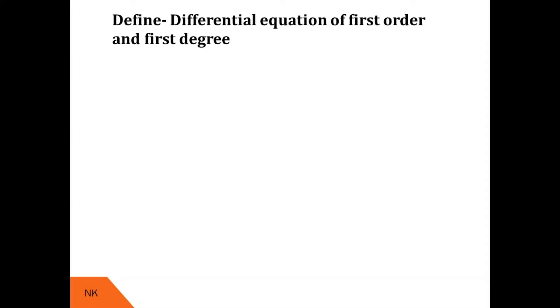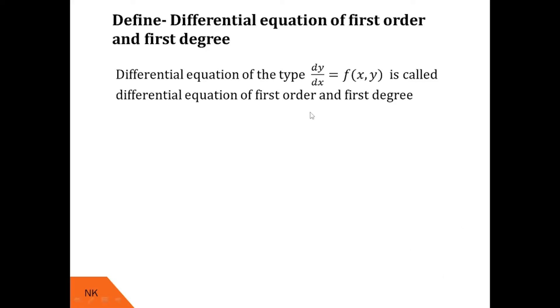A differential equation is an equation in which a differential coefficient dy/dx or dy is present. A differential equation of first order and first degree is one in which the differential coefficient appears with first order and first degree. Look at this differential equation: dy/dx = f(x, y). Here the order of the derivative is 1 and its degree is also 1, which is why it is called a differential equation of first order and first degree.